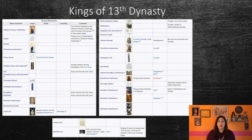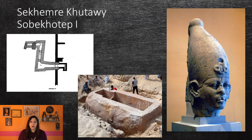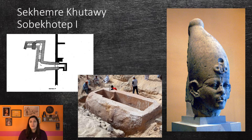Some of the kings of this period have at least been preserved in some relief and statuary. Sekemre Kutawe Sobekhotep I, who is sometimes known as Amenemhet Sobekhotep, was the first king of the 13th dynasty. He is mentioned in Cahoon Papyrus IV, which is a census of a household of a local lector priest. This papyrus helped establish that Sobekhotep I ruled sometime close to the rule of Amenemhet III. He may have built a Heb-sed chapel in Metamund, and other structures in Deir al-Bahri and Luxor.